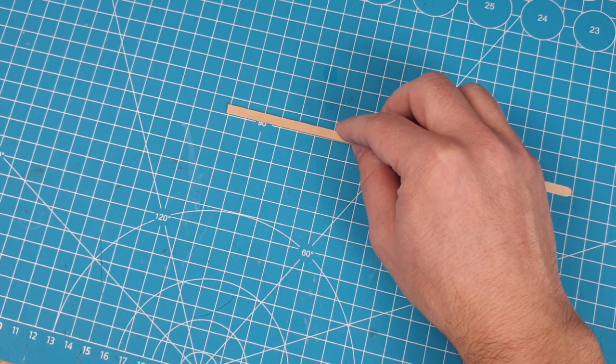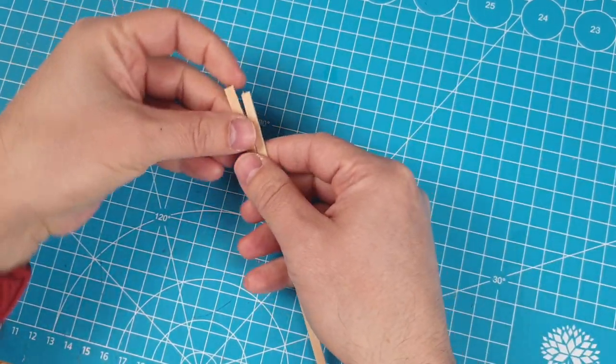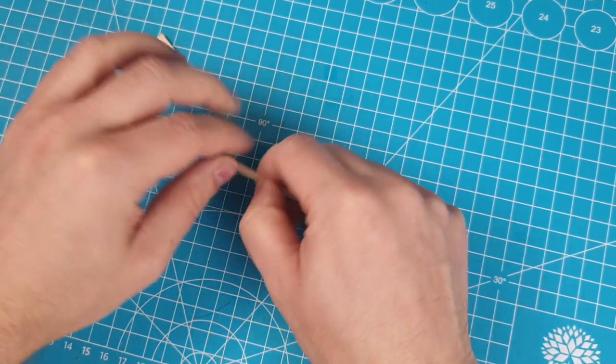You'll probably want to keep it in place somehow. Generally speaking, you'll want something to fix the ends to and have something run through the middle of the coiled wire.